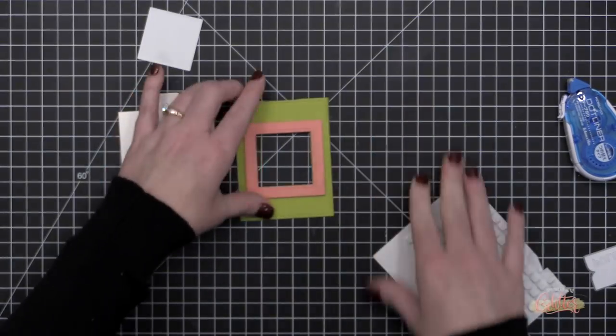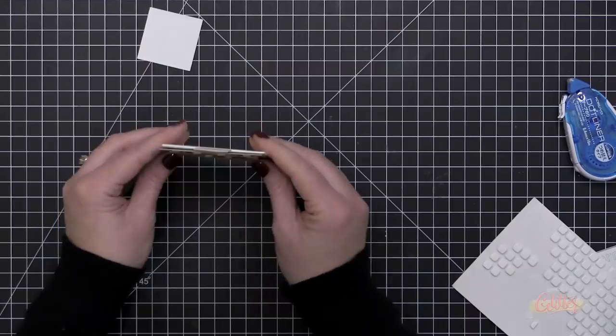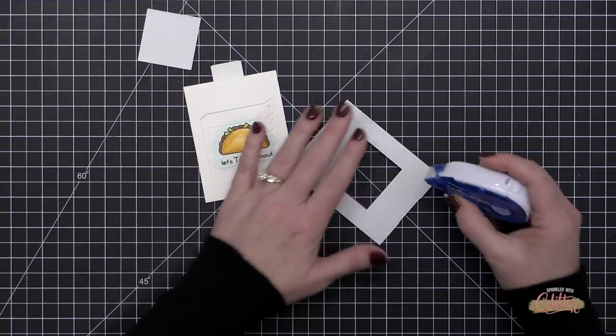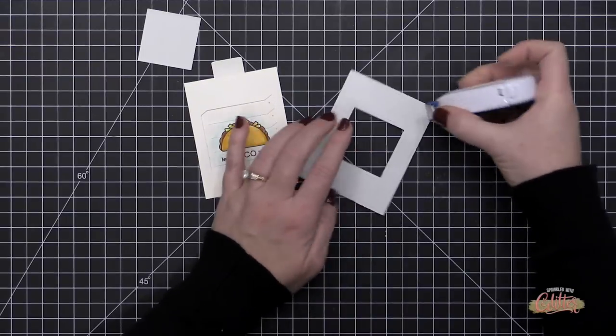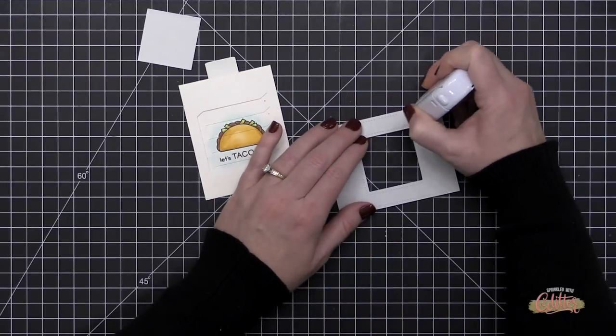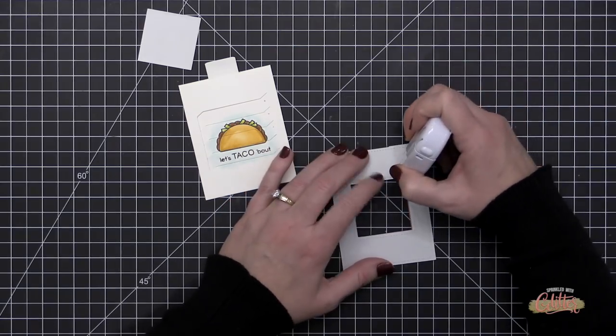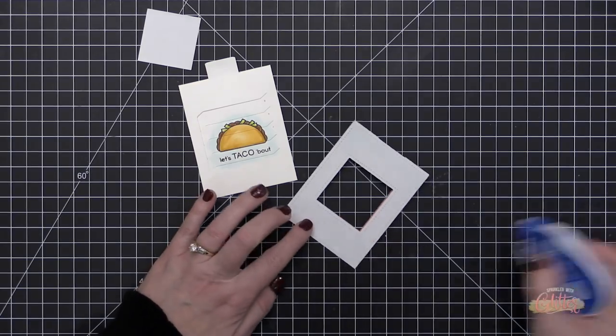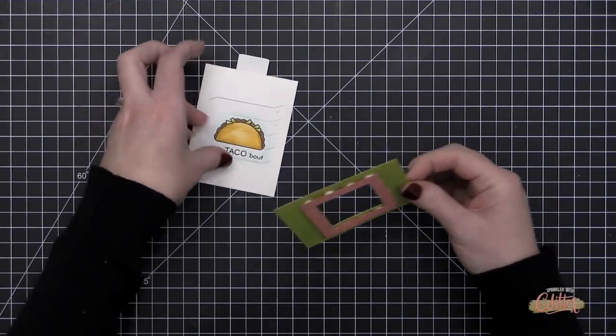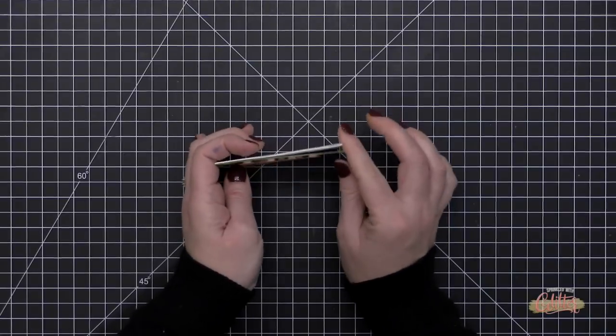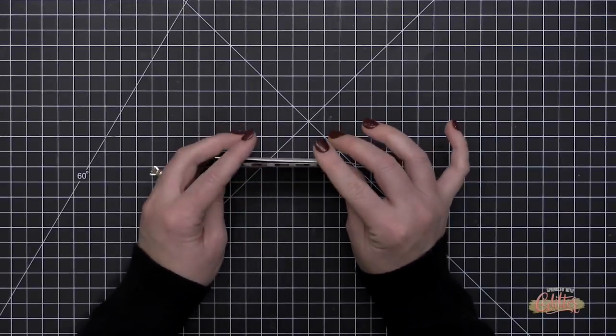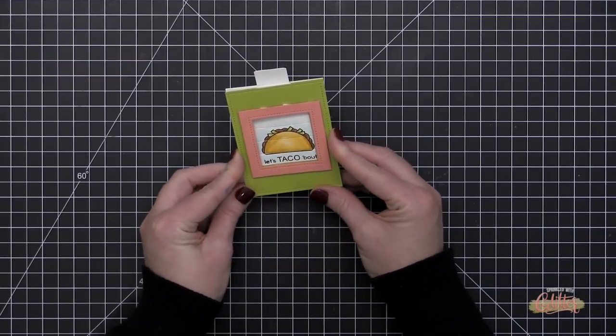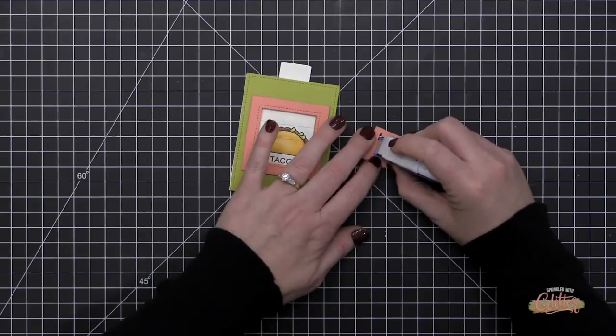There is one little trick you want to keep in mind when you're adhering either the frame or this picture changer add-on cover portion. You want to only add your adhesive from the inner corner to the outer corner of these frames, and that's going to keep you from adding adhesive where it's going to impede the movement of your slider there. That is the same also for that little frame that I've added onto the front. If you want to add that directly onto the picture changer you can do that, but just make sure you're just adding it from that corner to the outer corner to keep everything moving freely.